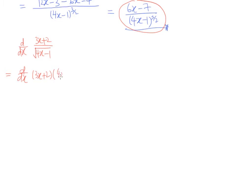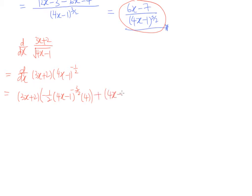Applying the product rule: differentiate one and keep the other. We keep 3x plus 2 and differentiate the 4x minus 1 to the power of negative half. This involves a chain rule, giving us 4x minus 1 to the power of negative 3 over 2, multiplied by 4. Then plus — since the product rule is a plus — we keep the 4x minus 1 to the power of negative half and differentiate the front, which gives us 3. This is our product rule derivative.